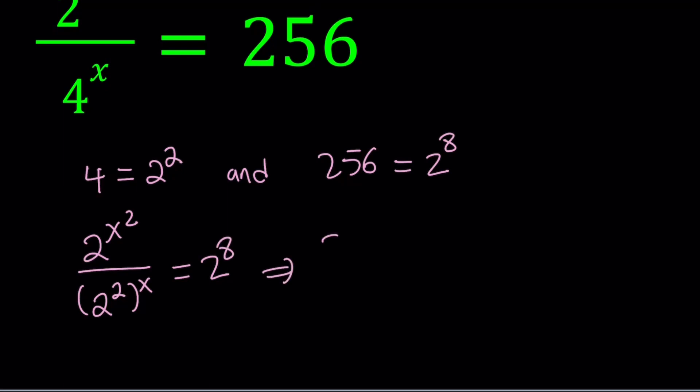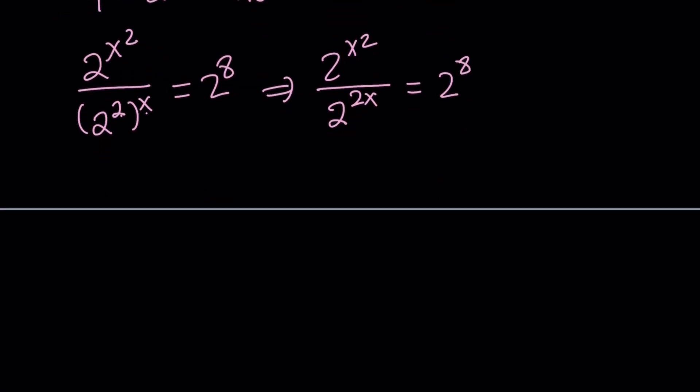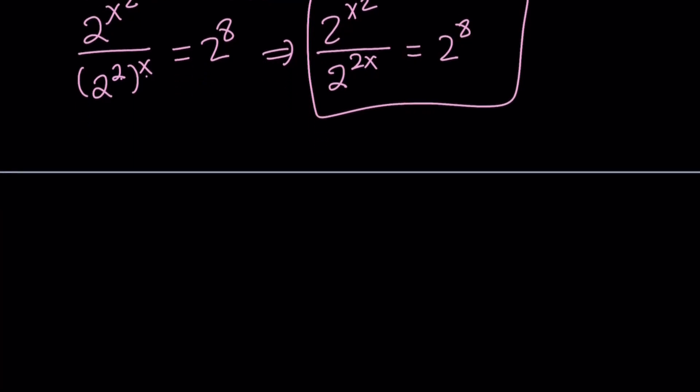Now from here we can get 2 to the x squared, multiply the exponents 2 times x, that is 2 to the power 2x equals 2 to the power 8. And then now, since we have division, we can go ahead and subtract the exponents, and that gives us 2 to the power x squared minus 2x equals 2 to the power 8.